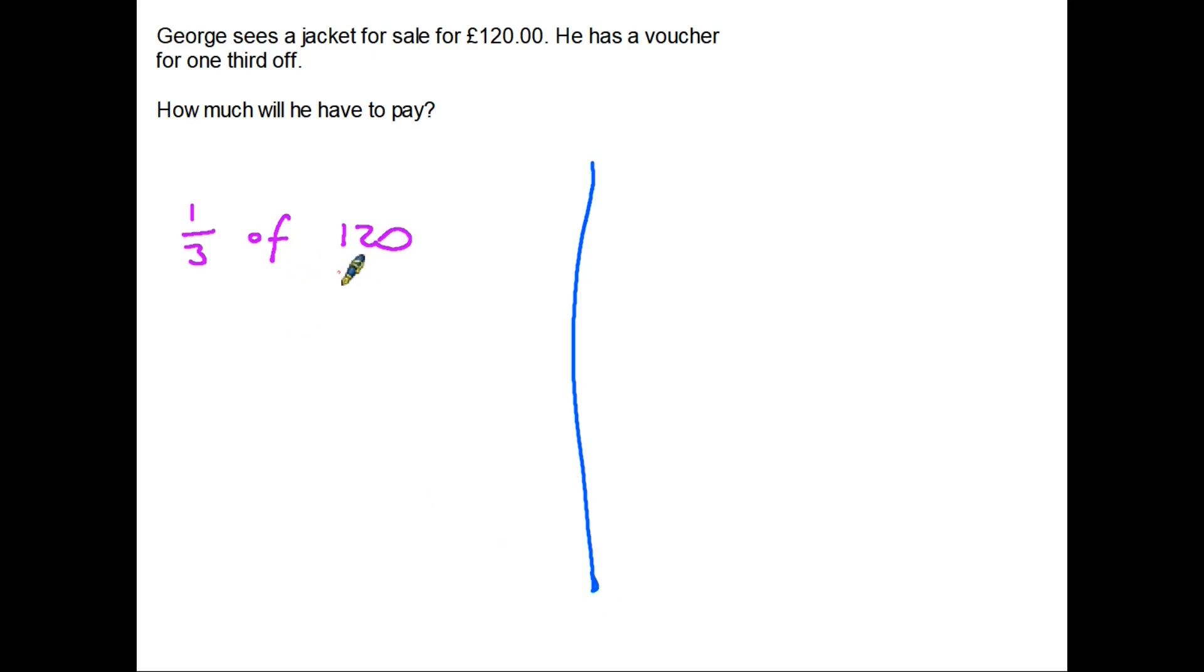all we have to do, following the golden rule, 120 divided by three. So 120 divided by three is 40. Now if we take that 40 and multiply by the top, well in this case the top is only a one, so 40 times one is 40. We don't have to do that. Now what we found there is how much he is going to save. So if he is saving 40 and the original price was 120, then 120 take away the 40 that he's going to save with his voucher and he will pay £80.